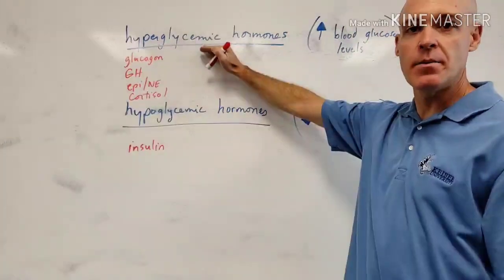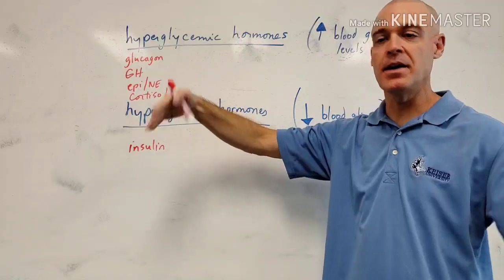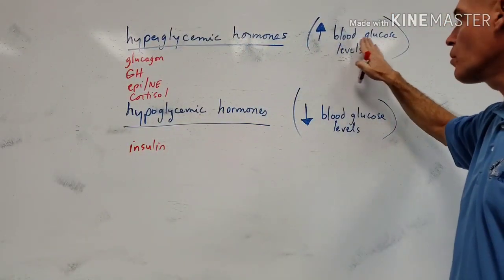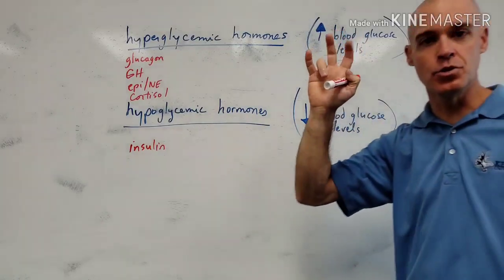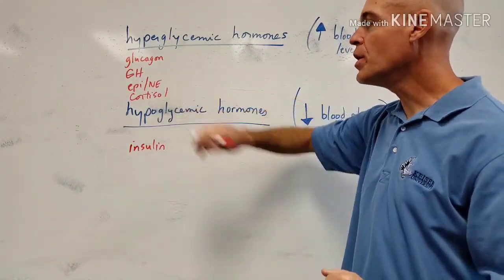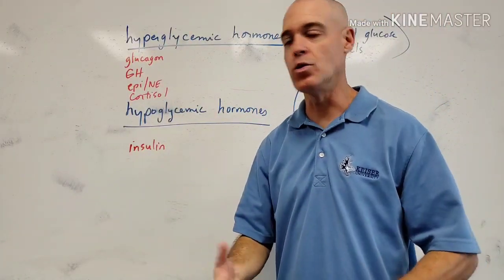A hyperglycemic hormone, hyper meaning high, is simply a hormone that raises our blood glucose or blood sugar levels. So I want to quickly show you the hormones that raise our blood glucose levels.